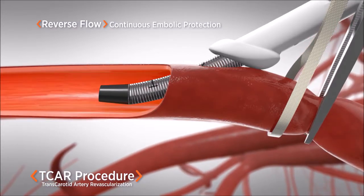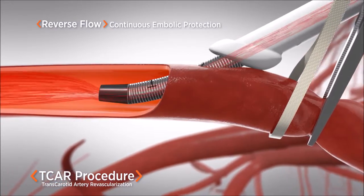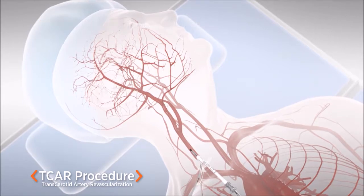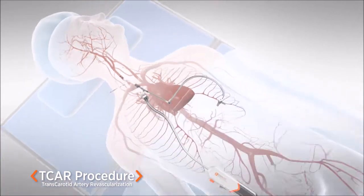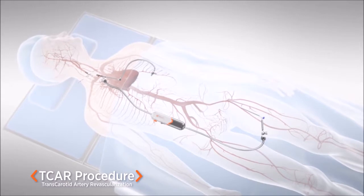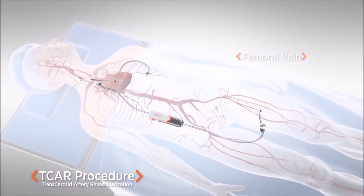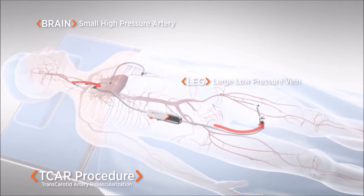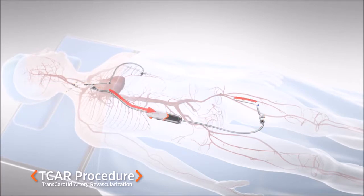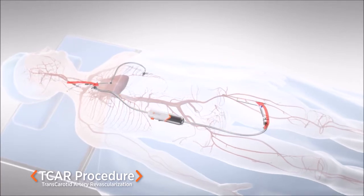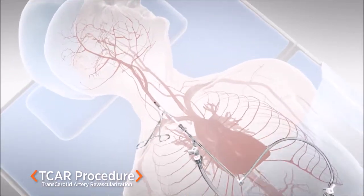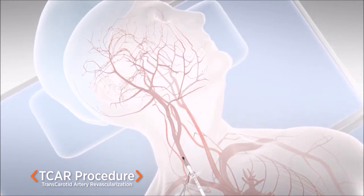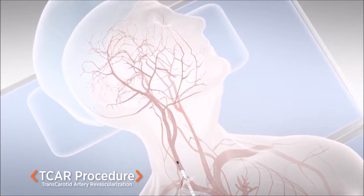But first, the sheath will temporarily reverse blood flow in the artery. Flow reversal keeps debris moving away from the brain, protecting it from dangerous emboli. The sheath is connected to a circuit outside the body that directs blood flow into the femoral vein. The connection between the high-pressure arterial system in the brain and the low-pressure vein in the leg creates a pressure gradient, causing blood to move backwards in the carotid artery. Clinical studies have shown this temporary redirection of blood flow is not problematic because the brain is fed by multiple arteries, which maintains cerebral blood flow throughout the procedure.